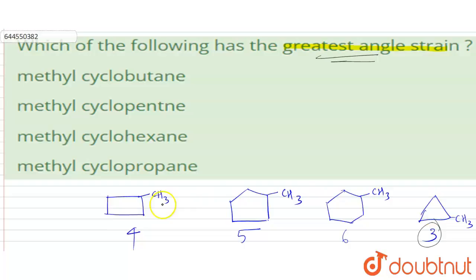More angle strain than cyclobutane, than cyclopentane, than cyclohexane. So the correct option is option D, methylcyclopropane.